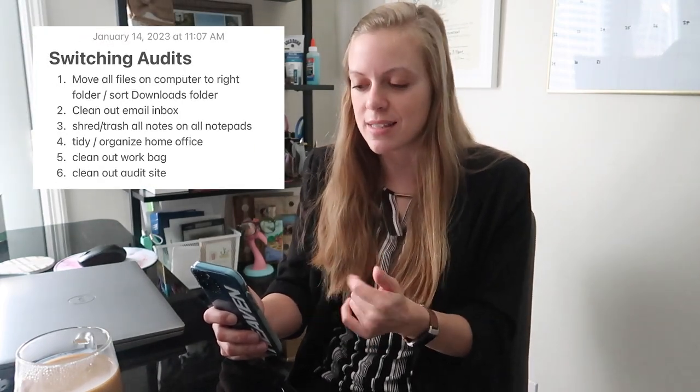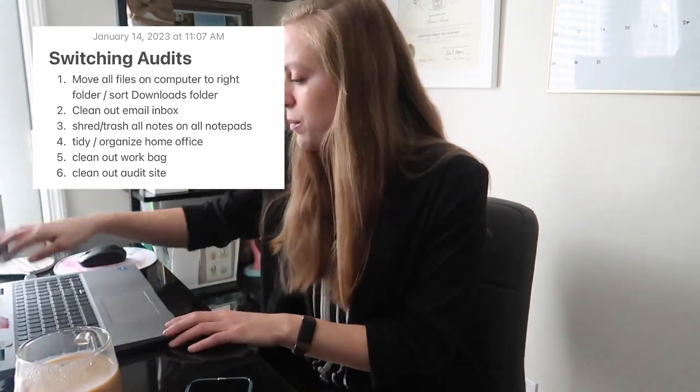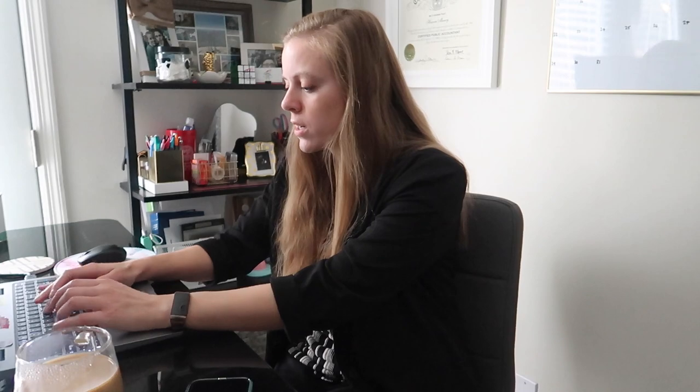So I kind of have this routine between audits, and I never really thought about the things I did until I made this list. One of the first things I do is organize all my work files on my work computer. I have a work folder, and inside that, each client has their own folder. Inside that, I have each fiscal year, and within that, each category — like cash, investments, endowments, capital assets — and then I put all the work papers in those folders. I'll go through my downloads and delete temporary files, keeping only what I need.